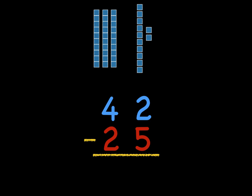Now let's show our regrouping with our numbers. We don't have four tens anymore. We've got three tens, and we don't have two ones anymore. We've got twelve ones. Now we have enough ones to do our subtraction.